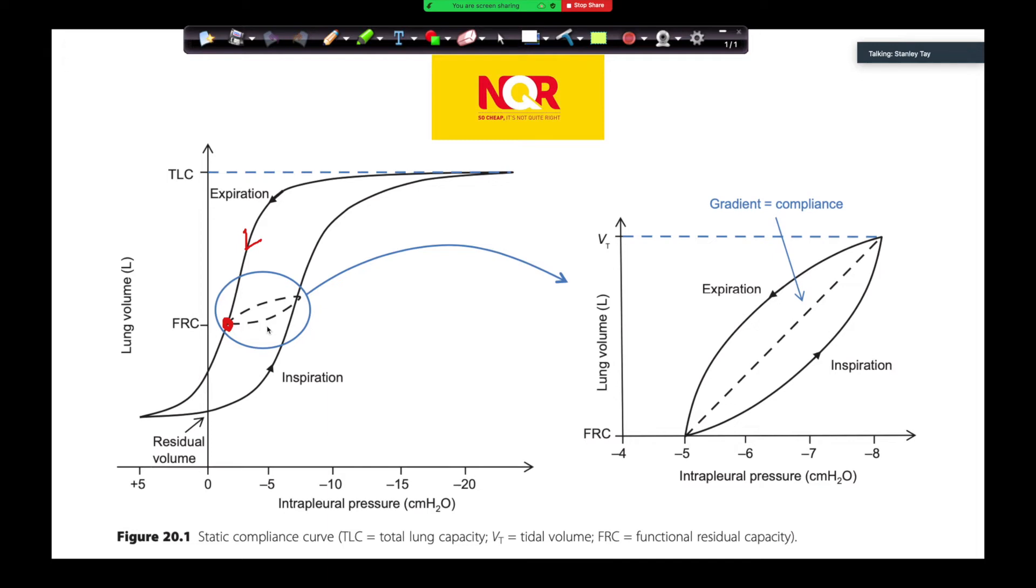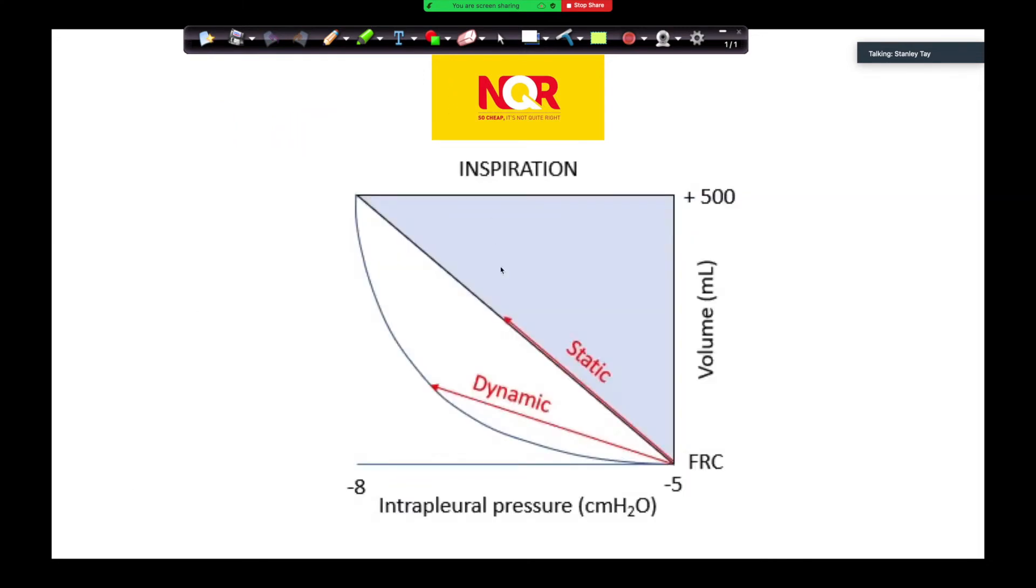So at FRC, you don't actually start from this point here. Remember that at FRC, you actually start when your intrapleural pressure is minus five. This is for lung. And so the diagram should actually look like this, not from here to here. So this is a tidal volume breath. And when we've got a tidal volume breath, remember to measure compliance is at points of no flow. So it's at end inspiratory and end expiratory. And from here to here, it's not static. It's dynamic.